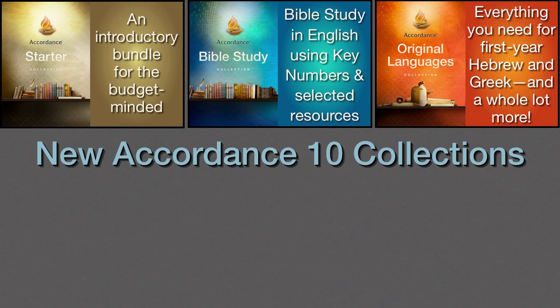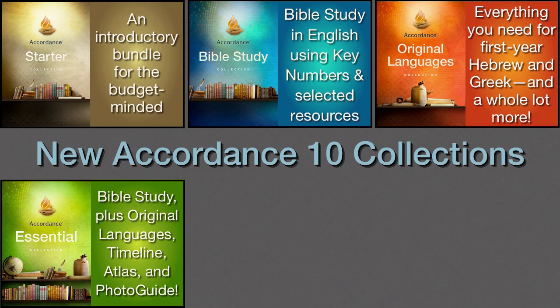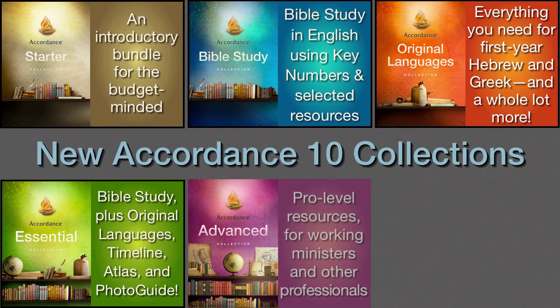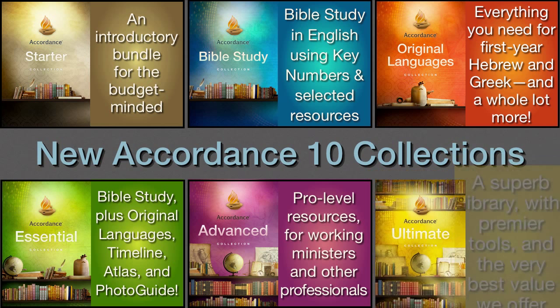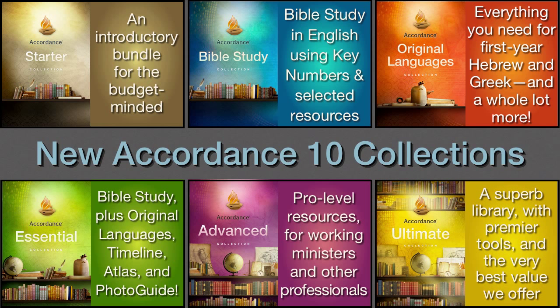Moving up the ladder, there's the Essential Collection, a combination of the Bible Study and Original Language Collections, plus our Timeline, Atlas, and Photo Guide. The Advanced Collection offers even more resources — it's designed for working ministers or other professionals. And finally, the Ultimate Collection is a superb library with premier tools and the very best value we offer, the equivalent of over $17,000 worth of books in print. And of course, all these collections include Accordance 10.